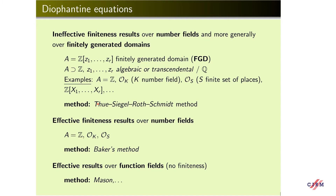There are also effective finiteness results over number fields, which make it possible, at least in principle, to determine the solutions. The most powerful method is Baker's method concerning linear forms in logarithms.